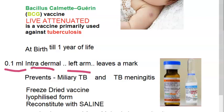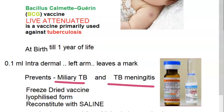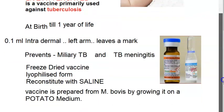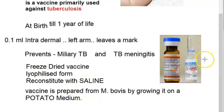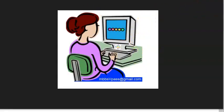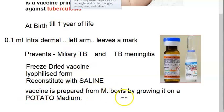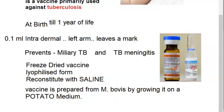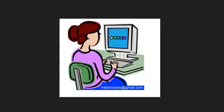BCG primarily prevents miliary tuberculosis and tubercular meningitis, with about 50% coverage against pulmonary TB. Within one to two months of vaccination, the person will become tuberculin positive. The vaccine is not prepared from Mycobacterium tuberculosis but from Mycobacterium bovis, grown on potato medium (Löwenstein-Jensen medium).